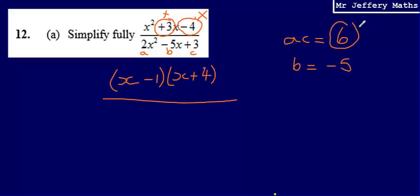And what I'm going to do is I'm going to work out two numbers which multiply to make 6, but will sum to make negative 5. And what I can say is that those two numbers that multiply to make 6 but sum to make negative 5 are going to be negative 3 and negative 2.